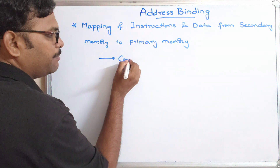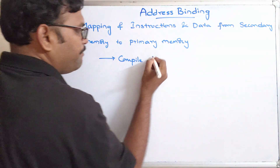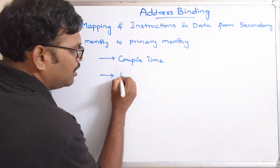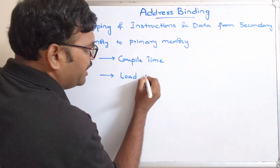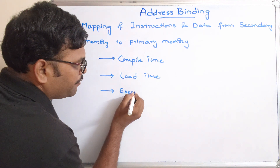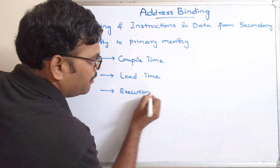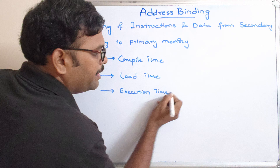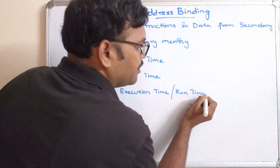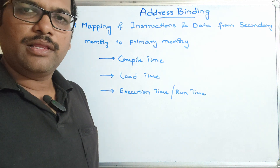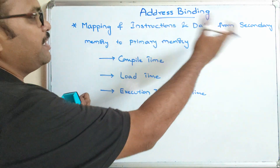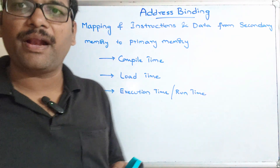The first is compile time address binding, the second is load time address binding, and the third is execution time — also called run time — address binding. So address binding means the mapping of instructions and data from secondary memory to primary memory.